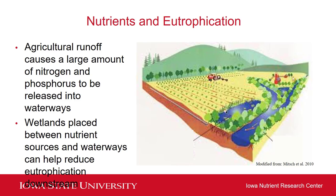Nutrients and eutrophication can be caused by a number of different things. In Iowa, one cause is associated with agricultural runoff. When you have agricultural farm fields, fertilizers or manure being applied, you can have the loss of nitrogen and phosphorus to nearby waterways. One way to help reduce this loss, especially to reduce nitrogen, is to install a wetland — to place a wetland between the source of nutrients and the waterway to hold those nutrients in that area and prevent them from flowing downstream and causing eutrophication.